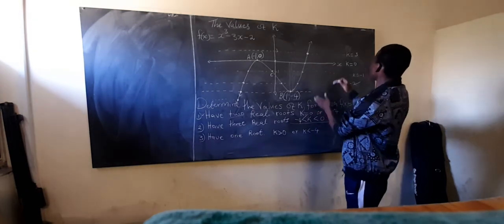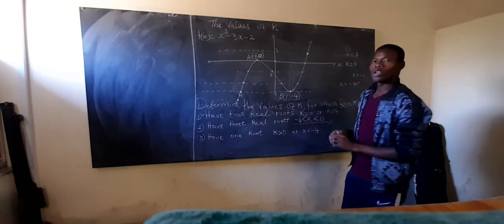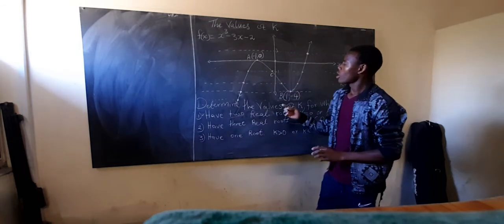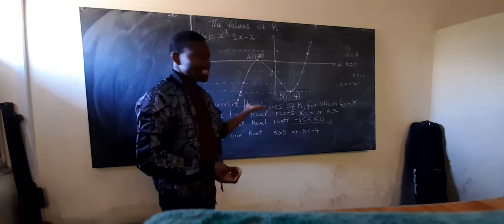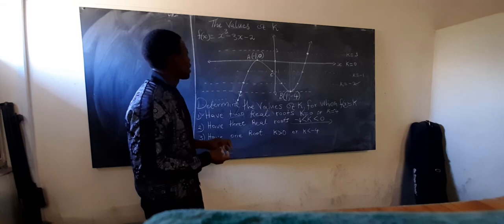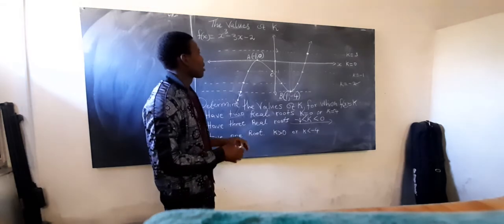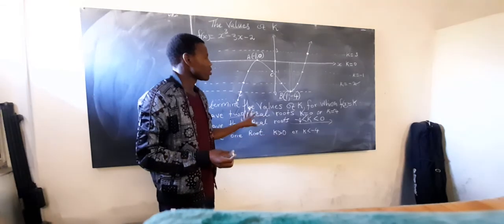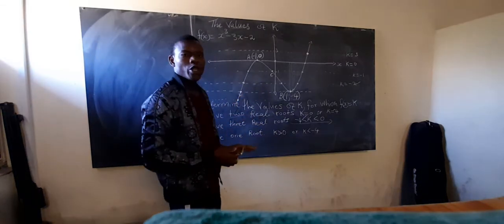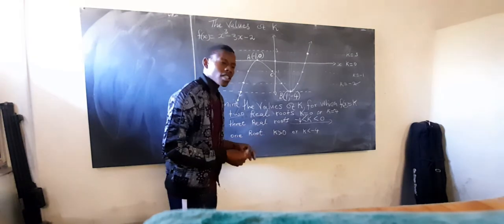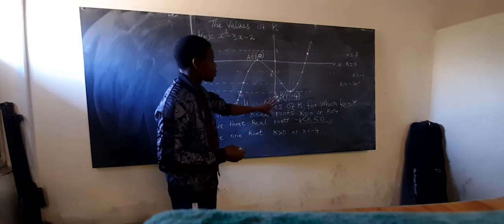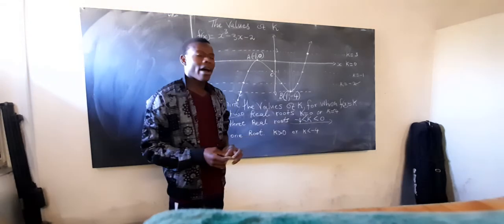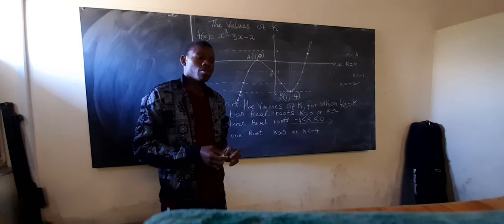These dotted values represent the image of the x-axis when you shift it by the value of k. The value of k differs depending on the nature of the question. Other questions may come but the idea is the same. Use this method if you find it comfortable, and I hope you enjoyed this video.